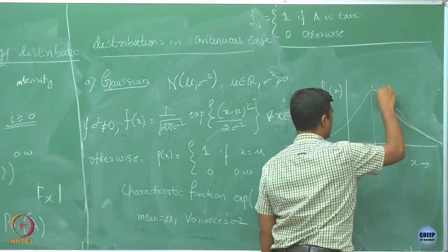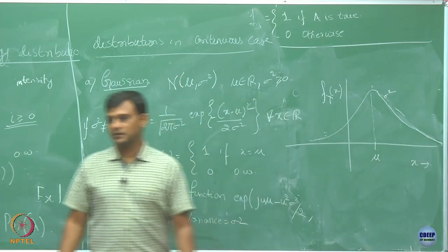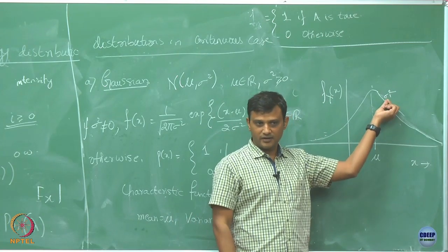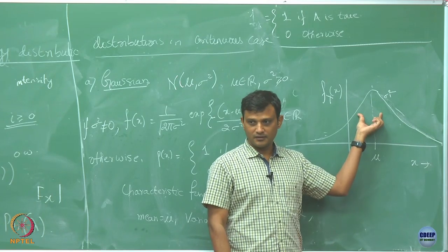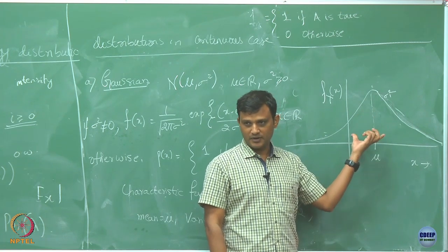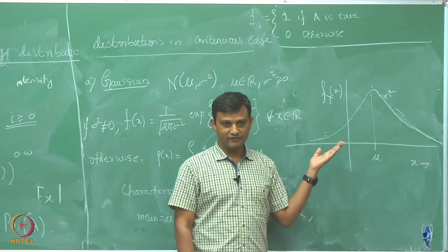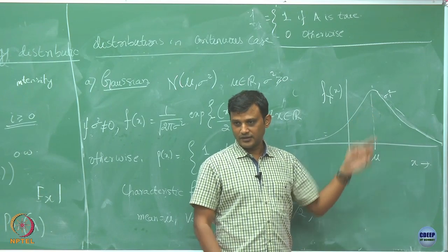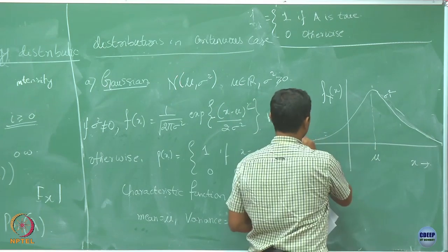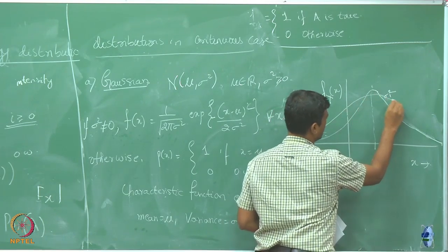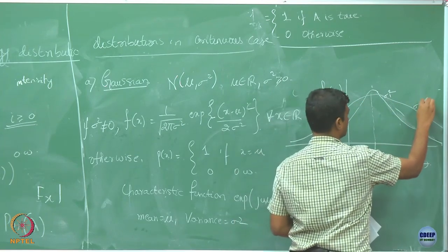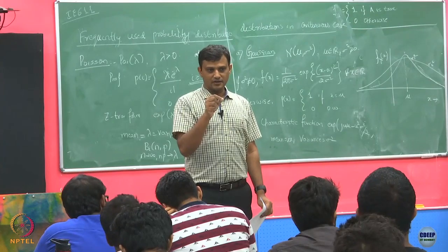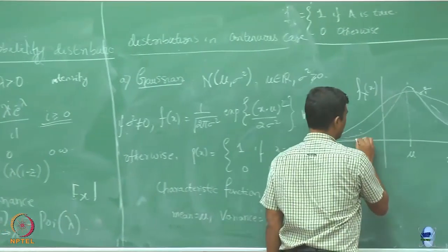Suppose this is for some sigma square and mu. If I increase the variance sigma square, keeping the mean the same, how will the lobe look? If I want another Gaussian random variable with the same mu but a larger variance, the lobe becomes fatter. And if sigma_3 is smaller than sigma_1, it is going to get thinner.